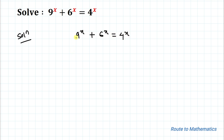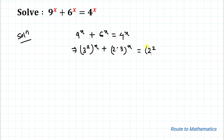Without any delay, let's start the solution. In the first step, let's factorize all the bases. We can write 9 as (3²)^x, and 6 as (2·3)^x, equals 4 as (2²)^x. This gives us 3^(2x) plus 2^x multiplied by 3^x equals 2^(2x).